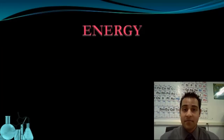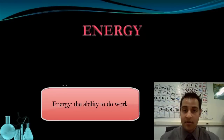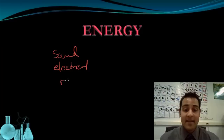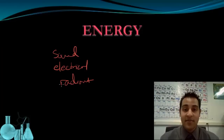So what is energy? Energy is the ability to do work. Energy can come in many forms that we're probably familiar with. We have sound energy, electrical energy, and radiant energy — which is the same as electromagnetic radiation. So that's x-rays, microwaves, radio waves, and visible light. Those are all forms of energy.